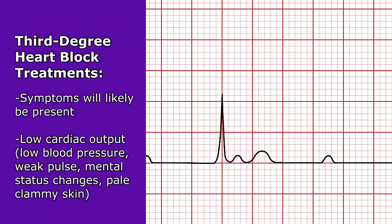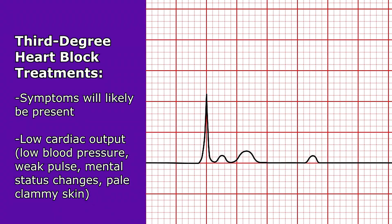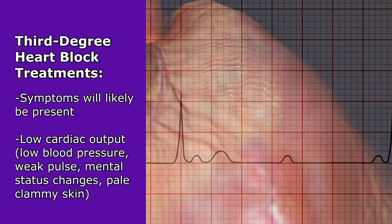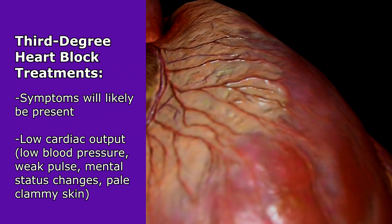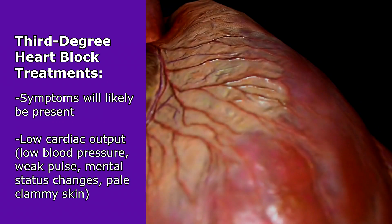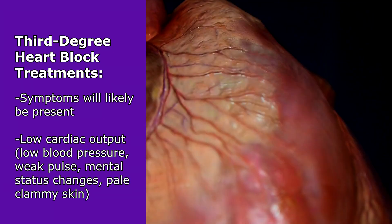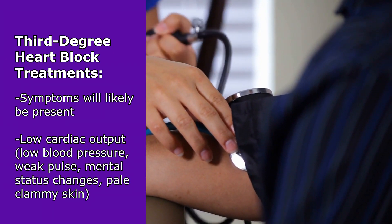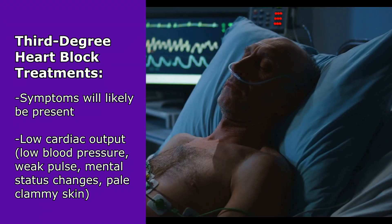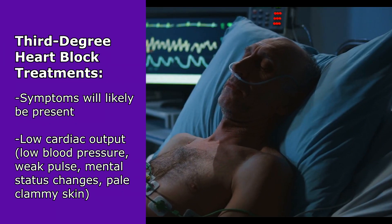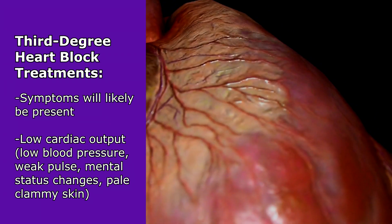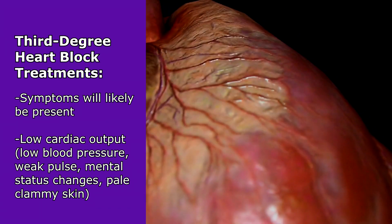What is the treatment for a third degree heart block? Your patient is usually going to have some signs and symptoms because when the heart is beating like this, the ventricles and atria are really independent of each other. It's not going to perfuse your body, so you're going to have a low cardiac output, which can present as low blood pressure, weak pulse, mental status changes — the patient just doesn't look good, they're pale, cold, and clammy. That heart is not pumping enough blood throughout the body, and this could progress to death.